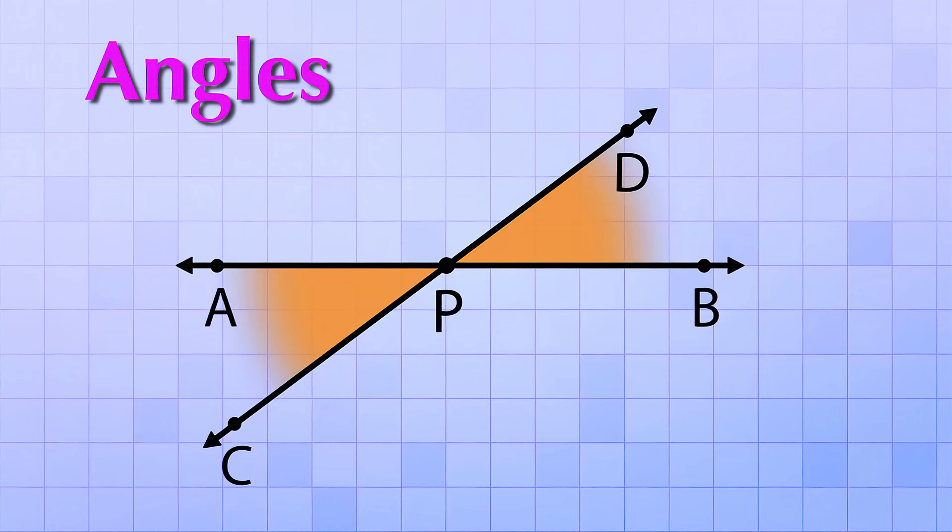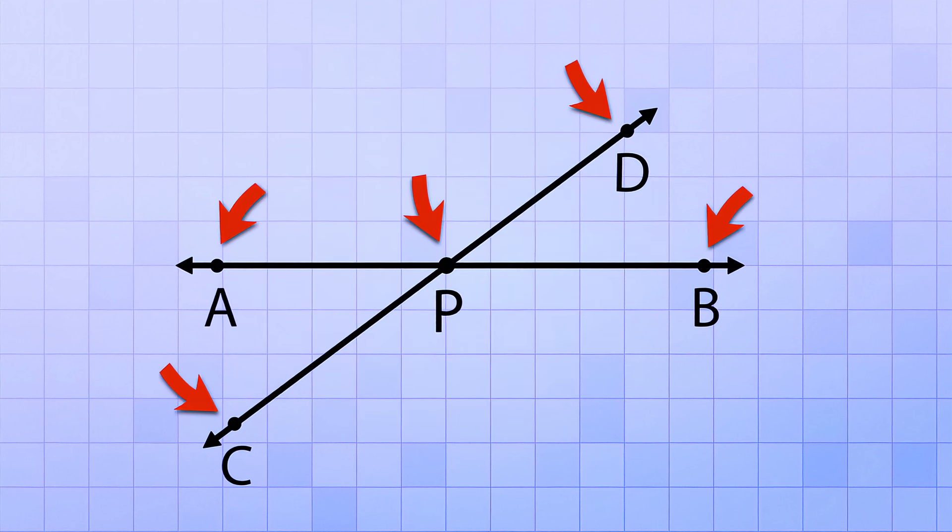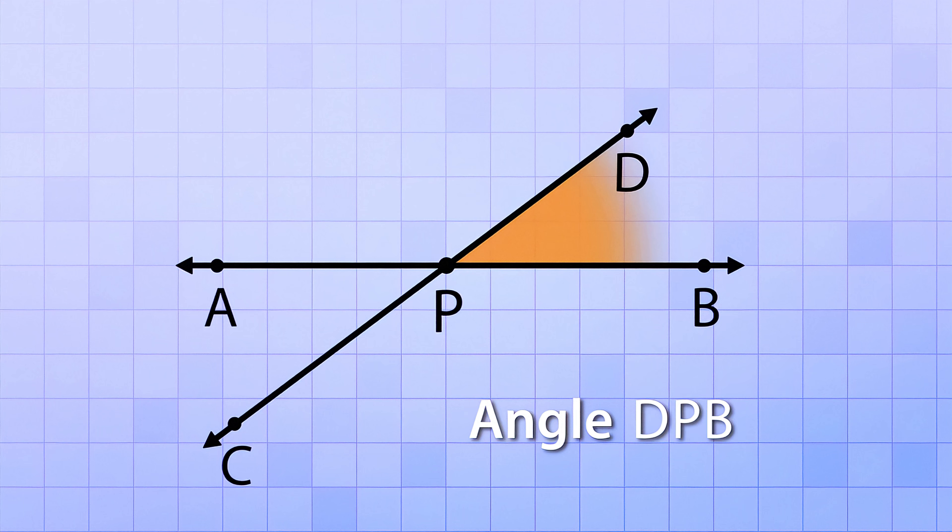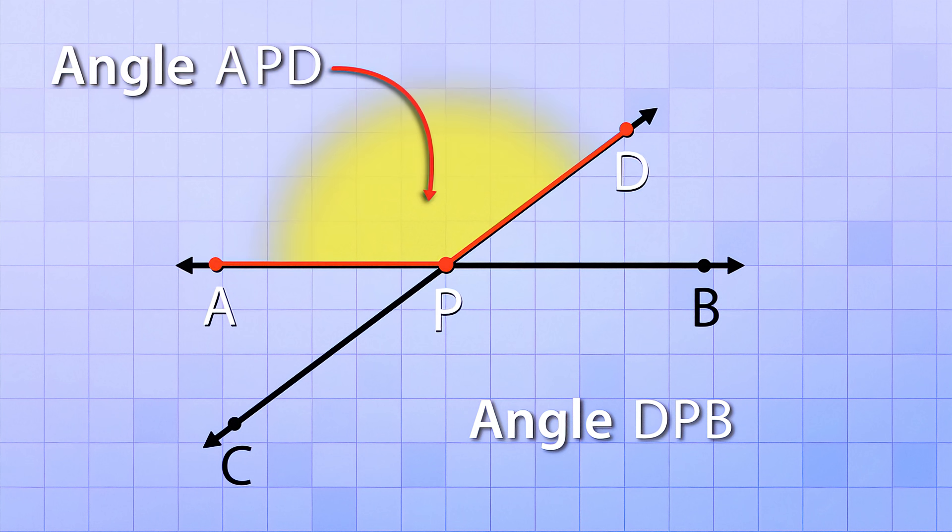You can think of the angles as the spaces or shapes that are formed between the intersecting lines. These intersecting lines form four angles: 1, 2, 3, 4. But instead of calling them angle 1, 2, 3 and 4, in geometry we name them by the points used to make them. For example, this angle here can be called angle DPB because if you trace along those points, like connect the dots, they outline that angle. And this angle here, we can call that angle APD because connecting those dots forms that angle.